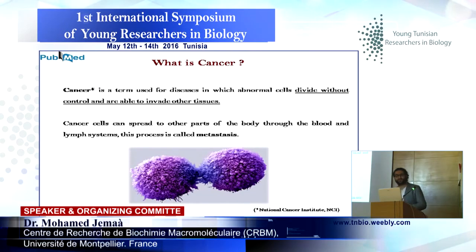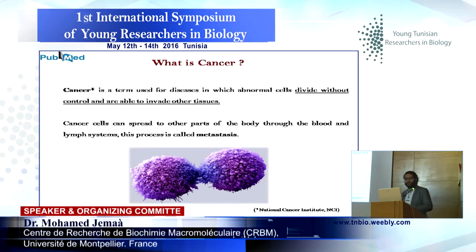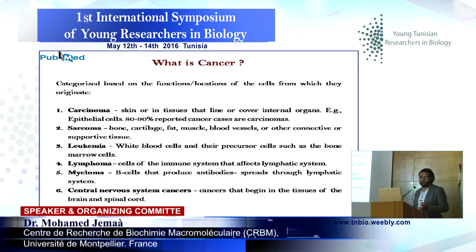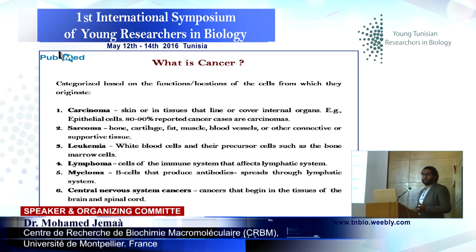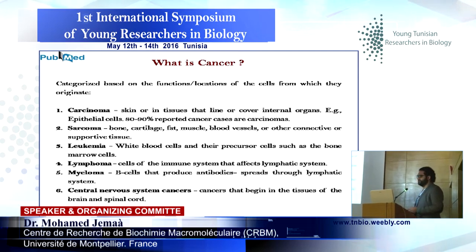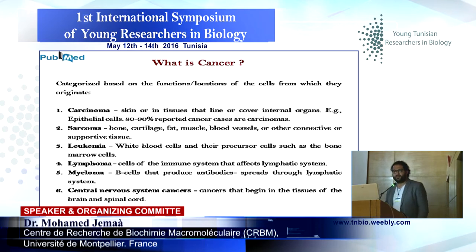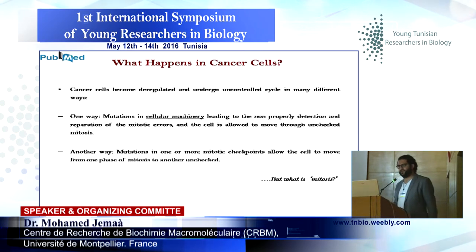So, what is cancer? Cancer is a term used for diseases in which abnormal cells divide without control and are able to invade other tissue — this is called metastasis. We can divide cancer in several types, like carcinoma, for example, which constitutes about 80 to 90% of all cancers and is constituted predominantly by epithelial cells, and other types like sarcoma, leukemia, and others.